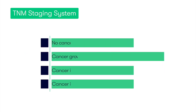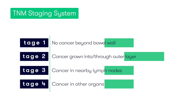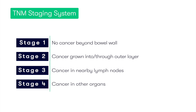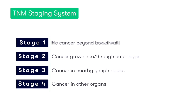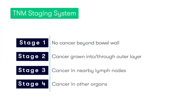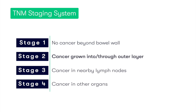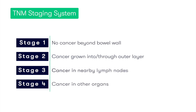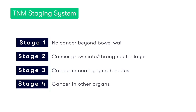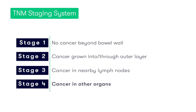Based upon the results of the TNM system, the colorectal cancer can be provided with a number stage between 1 and 4, which you can see demonstrated here in this table. In a nutshell, in stage 1, the cancer hasn't spread outside of the bowel wall. In stage 2, the cancer has grown into or through the outer layer of the bowel. In stage 3, the cancer has spread to nearby lymph nodes. And finally, in stage 4, the cancer has spread to other organs.